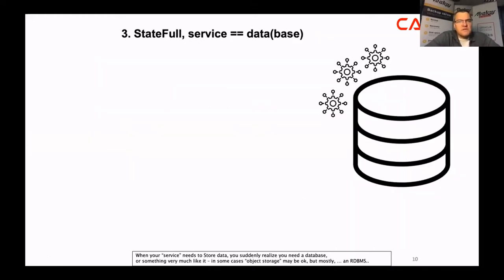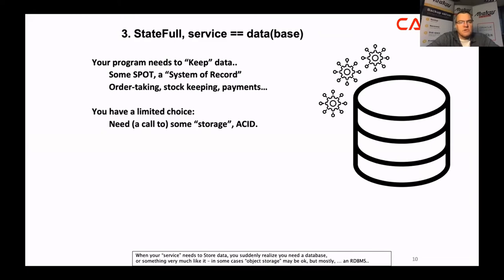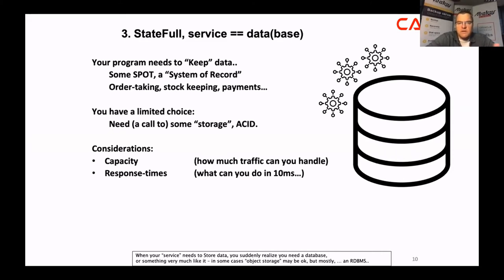The third case: you have a stateful service, you need a database — you're storing stock data, or bank accounts. Your database is the single point of truth, the system of record. You have limited choices: you need to commit your data to one point. You have to consider how much traffic you can handle — if you start a thousand microservices, how many connections does your database need? How quickly do queries need to return? Can you afford data loss?